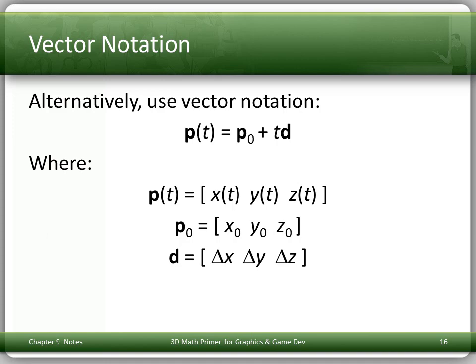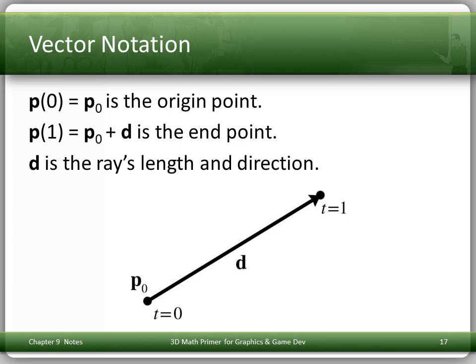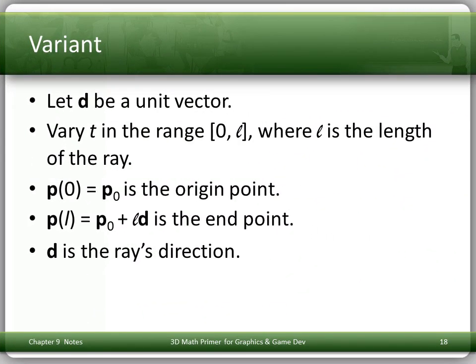There's another variant in common use: let d be a unit vector and vary t in the range 0 through l, where l is the length of the ray. In this case, p(0) is p0 the origin point, p(l) is p0 + l·d the endpoint, and d is the ray's direction. Note: that l should be a curly l — please correct your lecture notes.